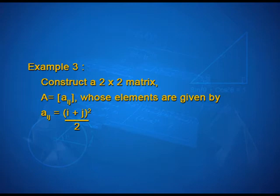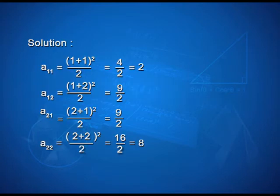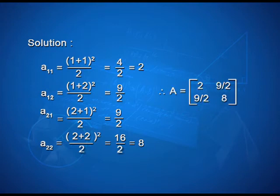Look at this example on your screen. Construct a 2 by 2 matrix A having elements Aij whose elements are given by Aij = (i+j)²/2. For the first element A11, we have (1+1)²/2 that is 4/2, so A11 first element is 2. Same way A12 is (1+2)²/2 that is equal to 9/2. A21 is equal to (2+1)²/2 that is again 9/2 and A22 element belonging to second row and second column will be (2+2)²/2 that is 16/2 simplified as 8. So, matrix becomes [2, 9/2; 9/2, 8].